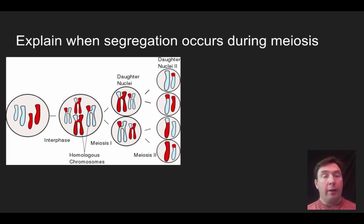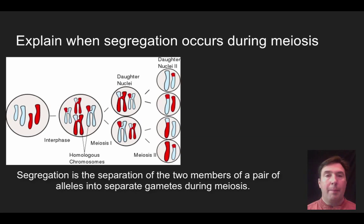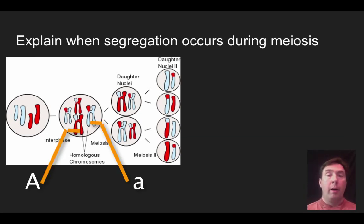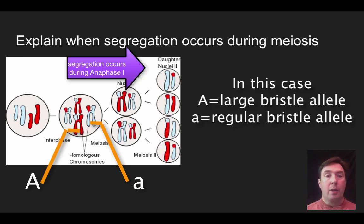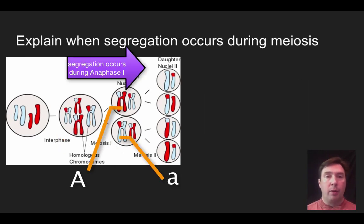What you should have come up with is that segregation is the separation of the big A from the little a. Let's say a parent is heterozygous for the A trait — large bristles — meaning they have one big A and one little a. When do the big A and little a separate? That's going to occur during meiosis I, when the homologous chromosomes are pulled apart as we go from diploid to haploid. That's the primary time for segregation.